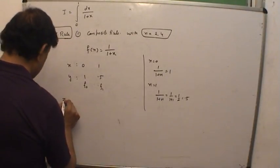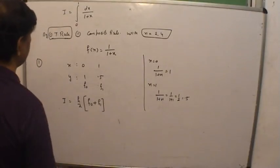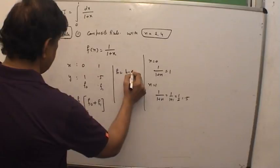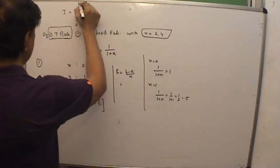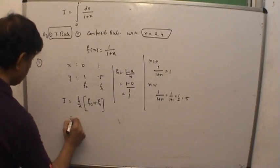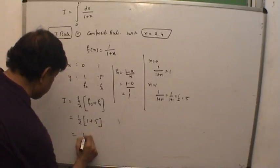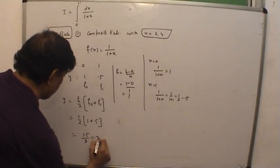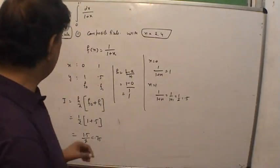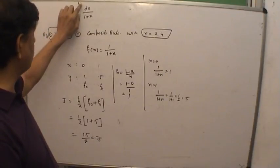We apply the formula: h/2 times (f0 plus f1). How do we find h? h = (b - a)/n = (1 - 0)/1 = 1. So the result is 1/2 times (1 + 0.5) = 1.5/2 = 0.75. Here it is important: h comes from (b - a)/n. The values are two-point conjunctive limits 0 and 1, and no n is explicitly given because the interval is understood to be 1.